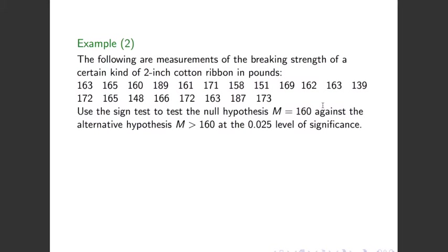Example 2. The following are measurements of breaking strength of a certain kind of 2-inch cotton ribbon in pounds. Use the sign test to test the null hypothesis that M equals 160 against the alternative that the median is greater than 160 at the 0.025 level of significance.